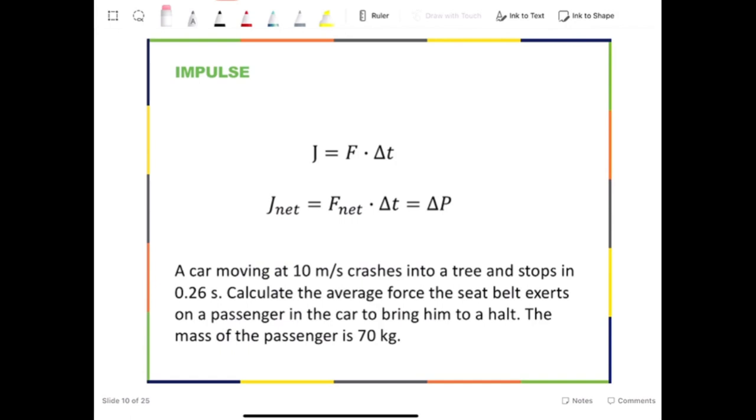In physics, a system is a group of objects. Let us take a look at this example. A car moving at 10 meters per second crashes into a tree and stops in 0.26 seconds. Calculate the average force the seatbelt exerts on a passenger in the car to bring him to a halt. The mass of the passenger is 70 kilograms.